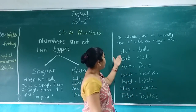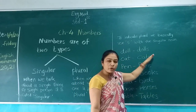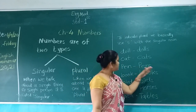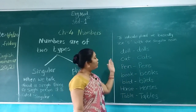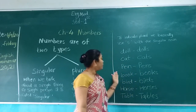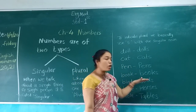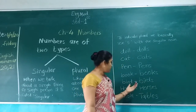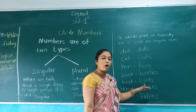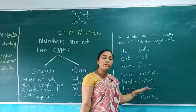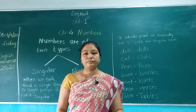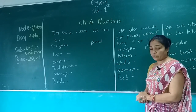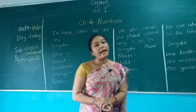Now read it again. Doll — plural form: Dolls. Cat — plural form: Cats. Pen — plural form: Pens. Book — plural form: Books. Bird — plural form: Birds. Horse — plural form: Horses. Table — plural form: Tables. We have learned the plural form by adding S.